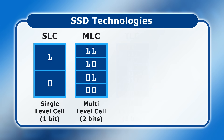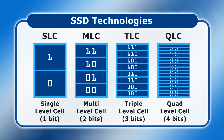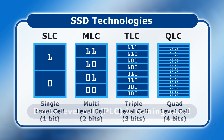Next came triple-level cell or TLC SSDs, which store three bits of data per cell, and then quad-level cell or QLC drives that store four bits per cell. Penta-level cell or PLC SSDs are also now close to market. Given that TLC, QLC, and PLC have to accurately distinguish an increasing number of partially programmed states, it's inevitable that they offer fewer and fewer program-erase cycles.